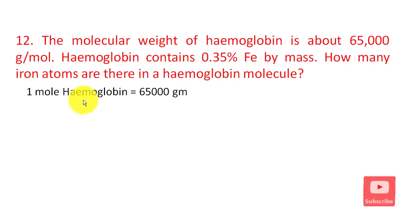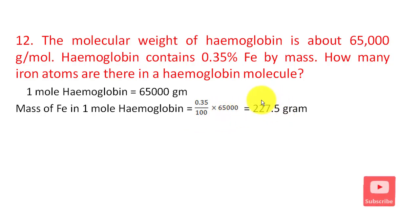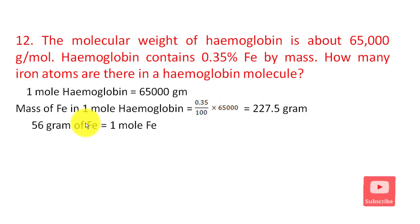1 mole of hemoglobin is about 65,000 grams per mole. The mass of iron in 1 mole of hemoglobin is about 0.35% of 65,000, which gives 227.5 grams of iron. 1 mole of iron is about 56 grams.